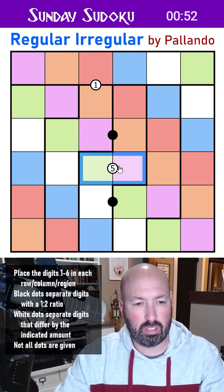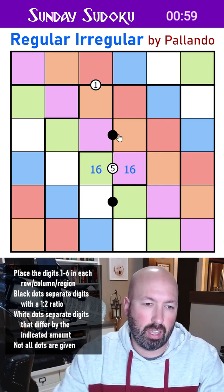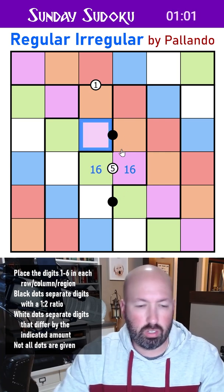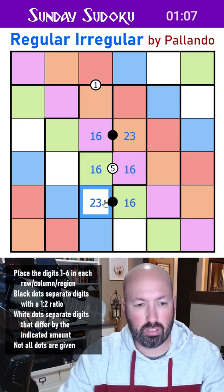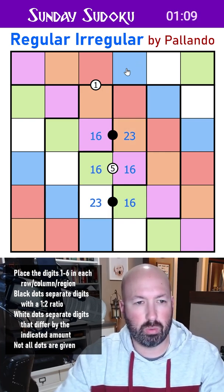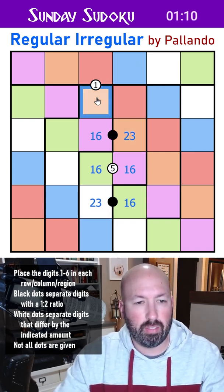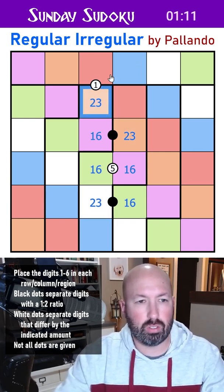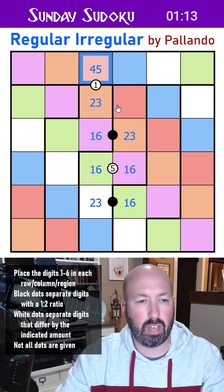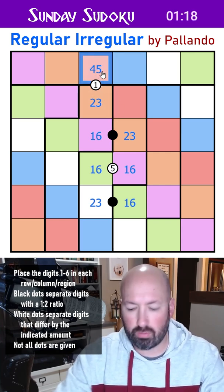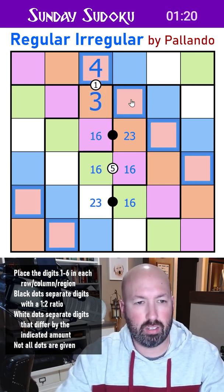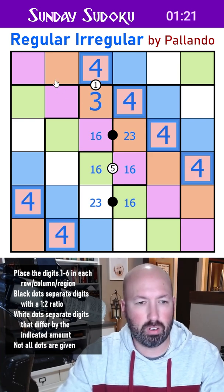So we can see with a difference of six, these have to be one and six. So this one is a one or a six, which means this has to be a two or three because of the black dot. So the white and the orange are the two and the three, therefore this is two-three, the red has to be a four or a five, but the only way to have a difference of one is four and three, so the reds are all fours.